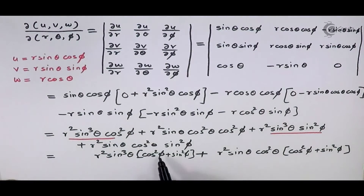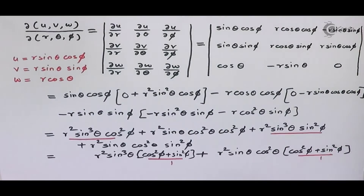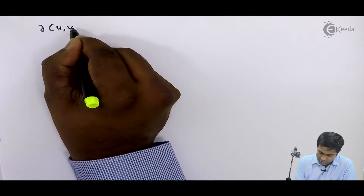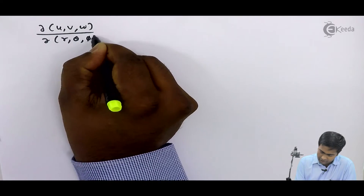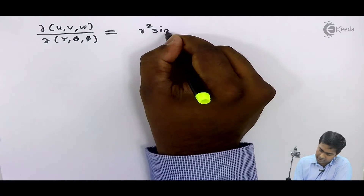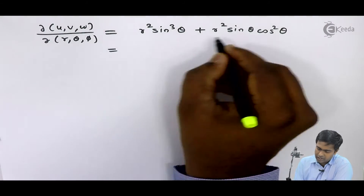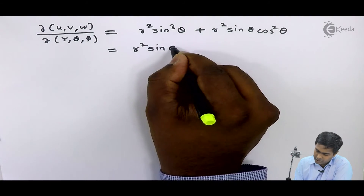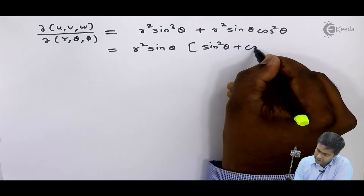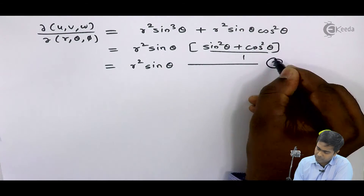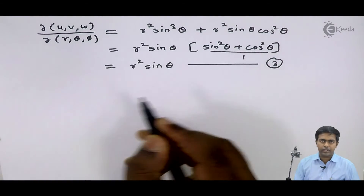Since cos² phi plus sin² phi equals 1 in both cases, we get r² sine cube theta from the first term and r² sine theta cos² theta from the second term. Therefore, the Jacobian of u, v, w with respect to r, theta, phi equals r² sine cube theta plus r² sine theta cos² theta. Taking r² sine theta as common, inside the bracket sine² theta plus cos² theta equals 1, so we get r² sine theta. This is equation number 3. Now let's substitute equations 2 and 3 into equation 1.